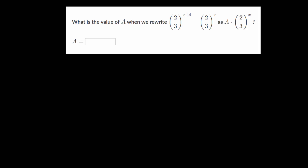With this example problem, we need to find the value of a when we rewrite 2 thirds raised to the x plus 4 minus 2 thirds to the x as a multiplied by 2 thirds to the x. So, we are given this difference here — we're subtracting — and we want to rewrite this so that we just have one term, rather than two separate terms that we're subtracting.